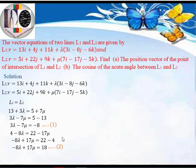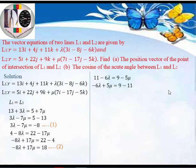Equating the k-components: 11 - 6λ = 9 - 5μ. Rearranging gives: -6λ + 5μ = 9 - 11 = -2. This is Equation 3. We now have three equations with two unknowns, λ and μ, so we can solve any two simultaneously. I'll choose Equations 1 and 3.